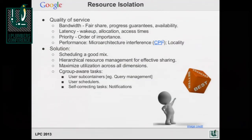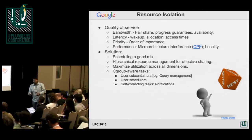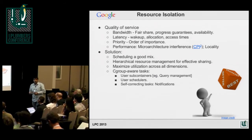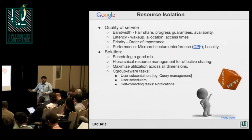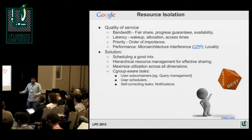What does resource isolation mean to us? It's some kind of quality of service we want to provide everybody. There's bandwidth, meaning you get a fair share. There are progress guarantees and availability guarantees — if you ask for memory and we say we'll give it to you, it'll be there for you most of the time. There's latency: you wake up in some time and actually start running when you have work to do. We give allocation guarantees — how long your allocation will take — and access time guarantees for memory access latency.